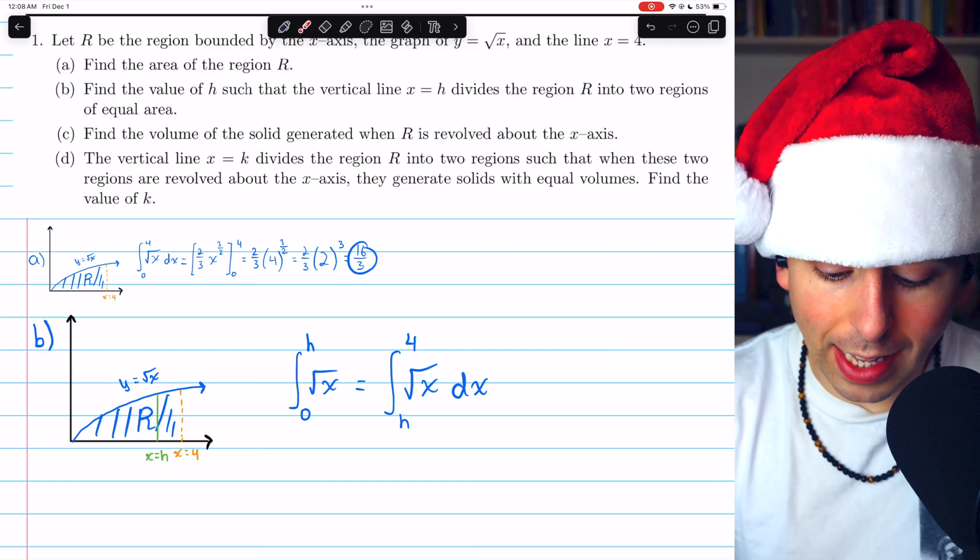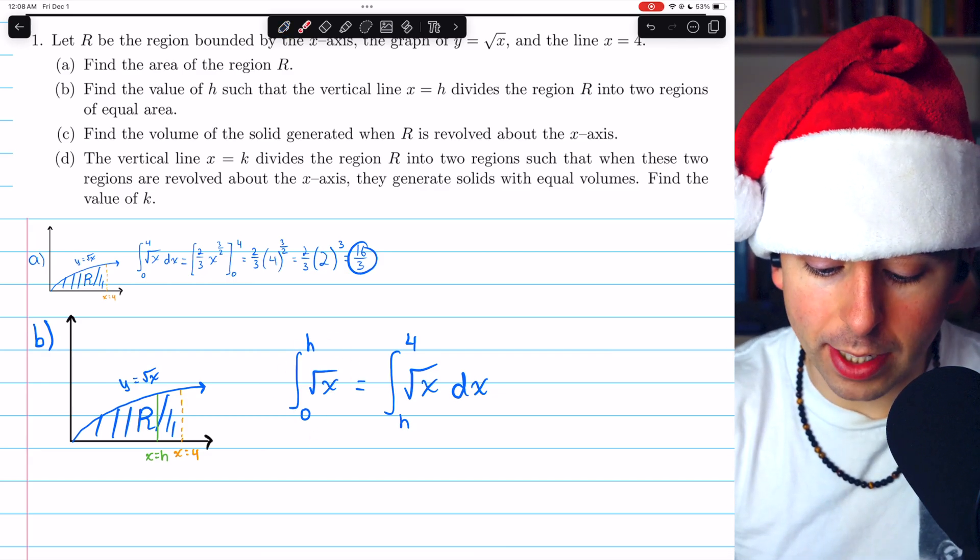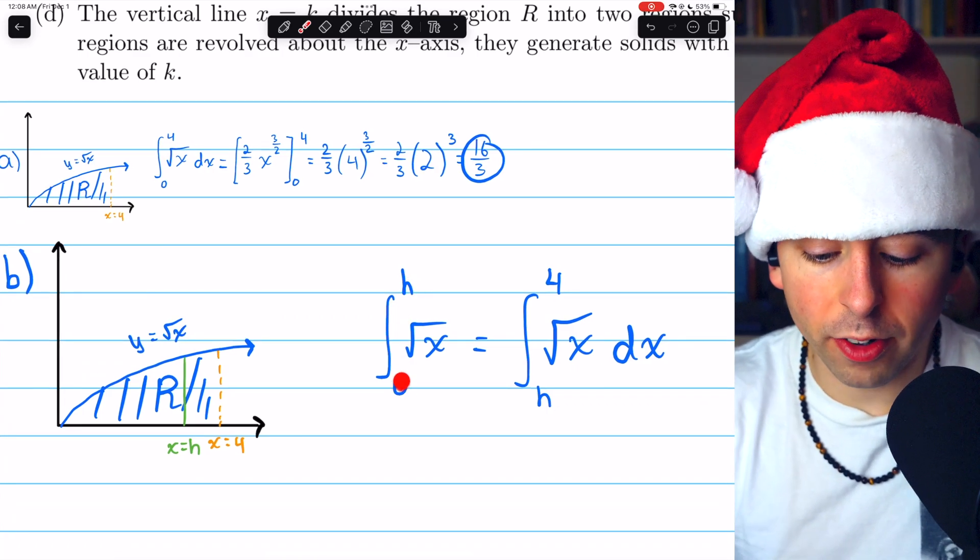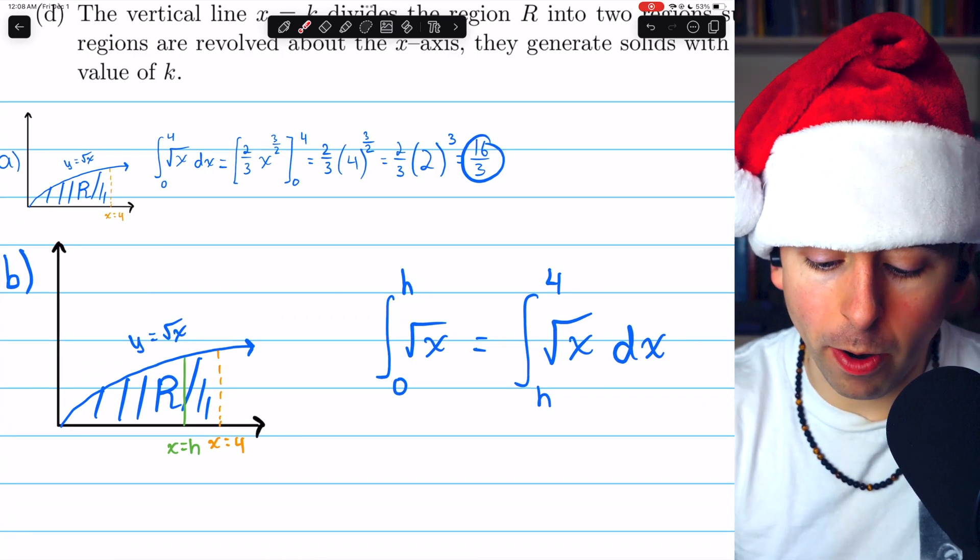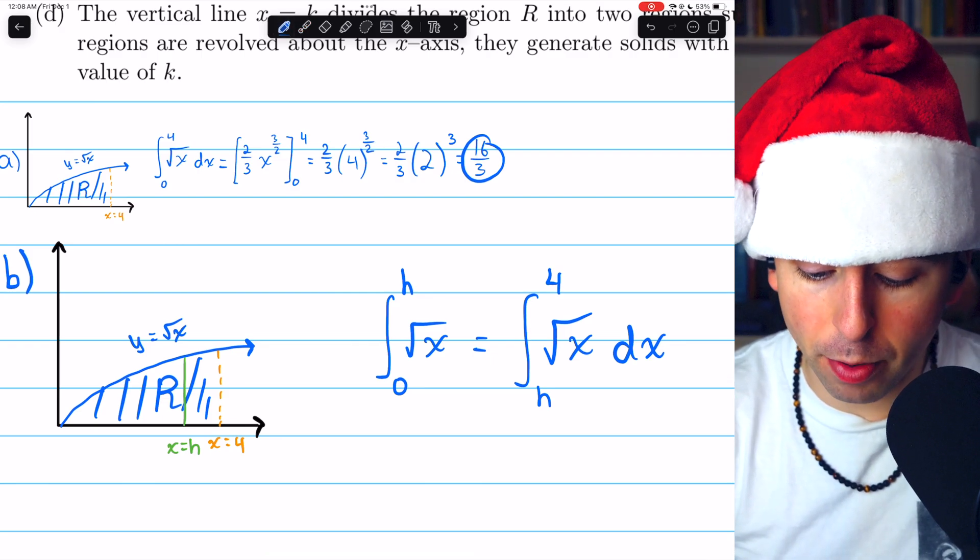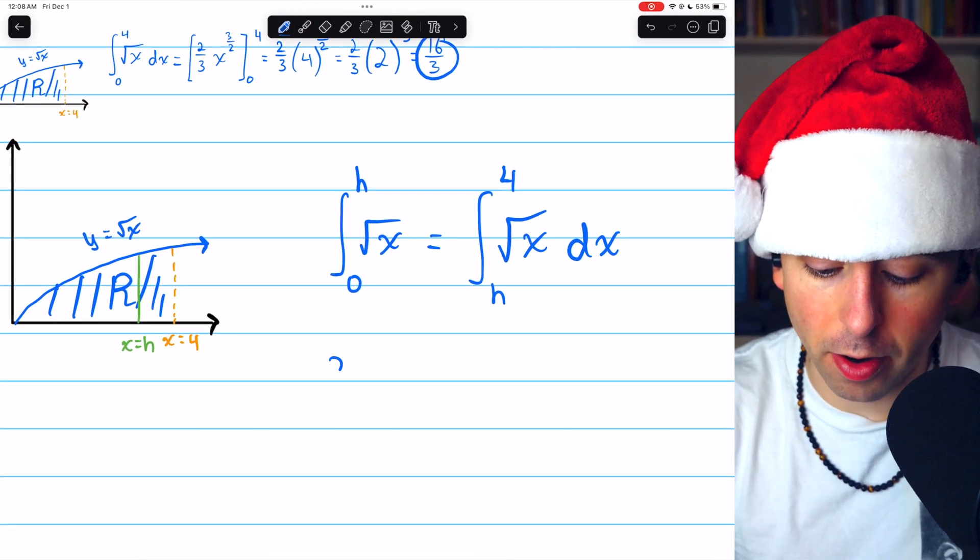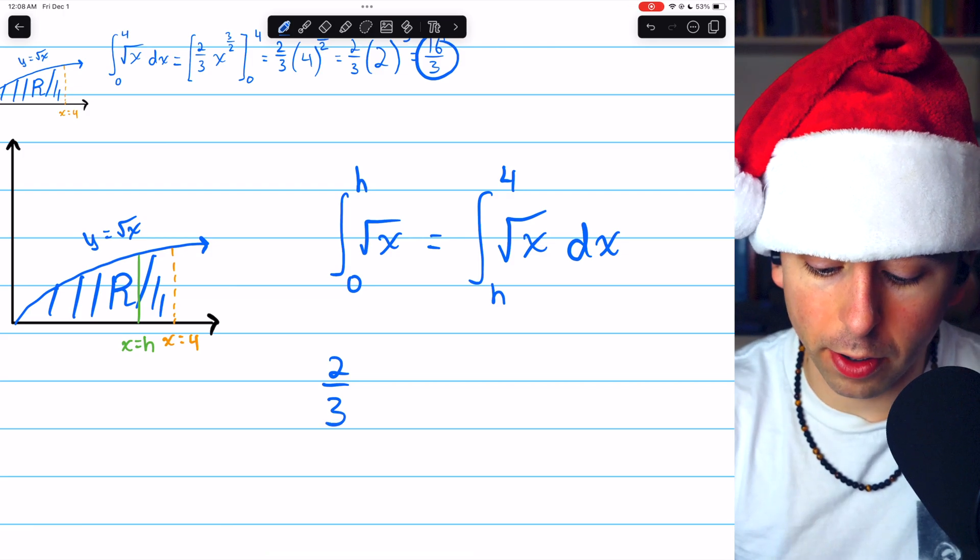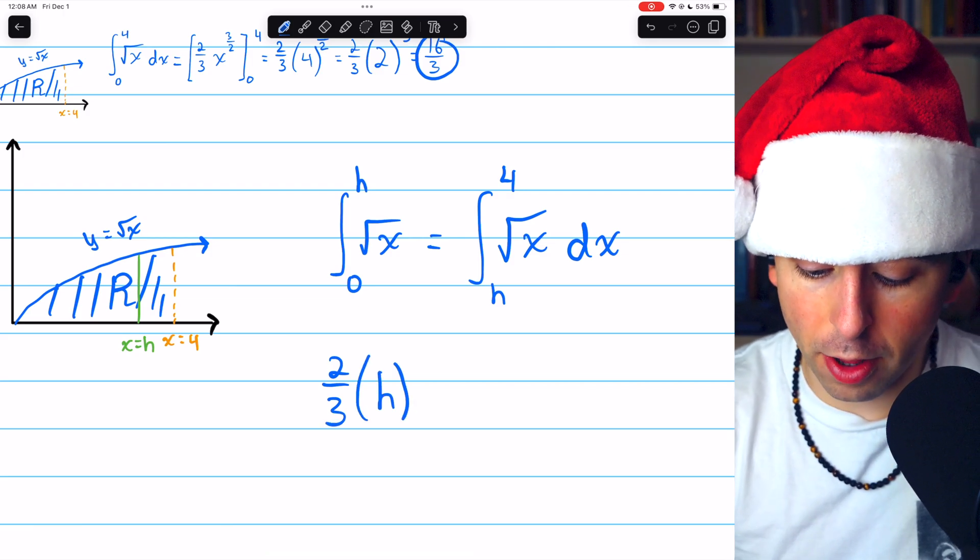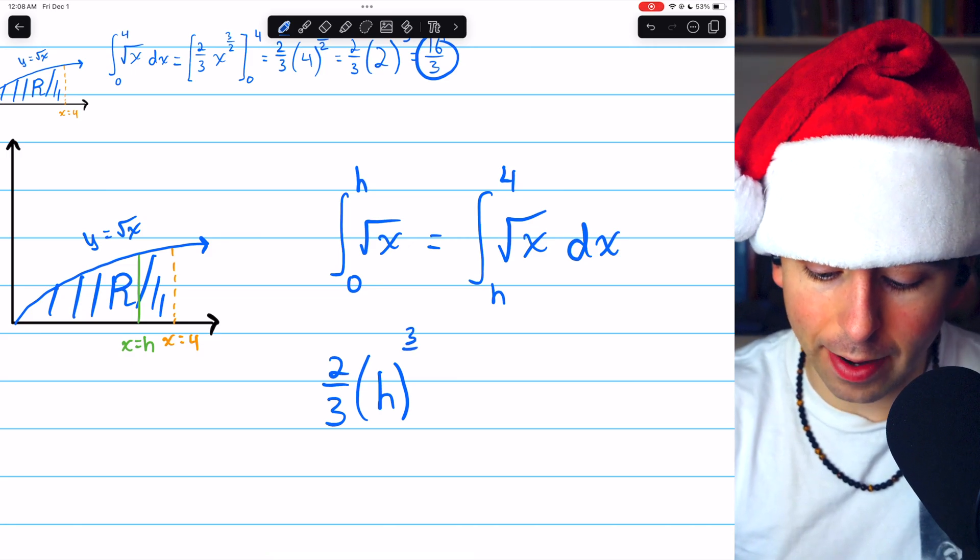This integral on the left is a lot like the integral we did in part A, except instead of going from 0 to 4, we're going from 0 to H. In the part A integral, you may remember that we ended up with 2 thirds times 4 to the 3 halves. By the same process on the left side here, we would end up with 2 thirds times H, the upper limit of this integral, to the power of 3 halves.